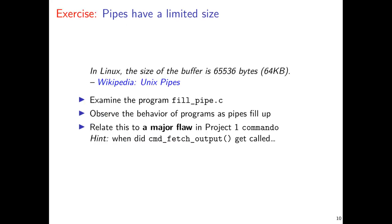The next thing we want to talk about is the limitations of pipes themselves. There's a well-known facet that they are not unlimited in size. The typical implementation in Linux is only about 64 kilobytes, 65,536 bytes for those keeping track at home. You can have a look at the program fill pipe here. The main thing we're driving at is that the fact that pipes have a limited size introduces a major flaw in project one.